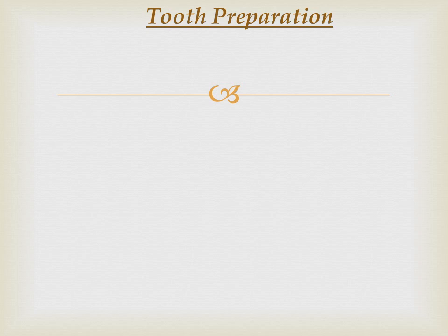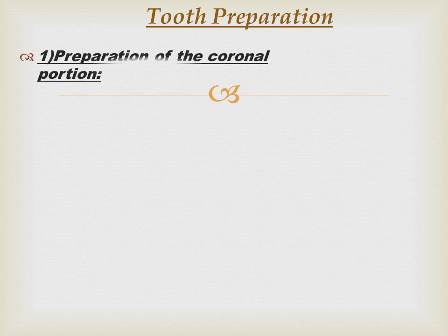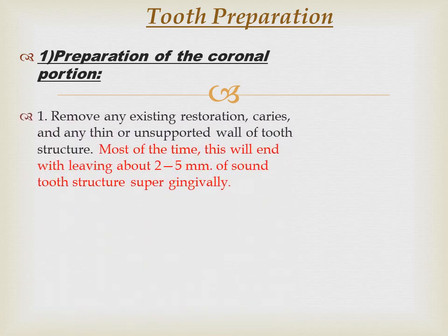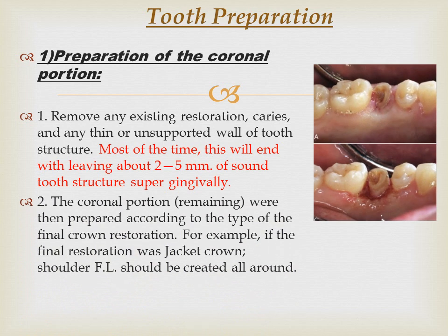Regarding preparation: first, any existing restoration, caries, or unsupported tooth structure should be removed. Most of the time this will result in leaving about two to five millimeters of sound tooth structure supra-gingivally. The coronal portion is then prepared according to the type of final crown restoration planned.